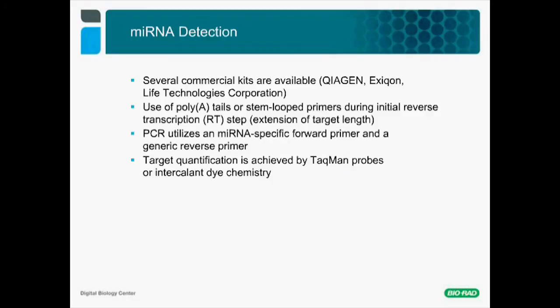Several commercial kits are currently available from companies such as Qiagen, Exiqon, or Life Technologies. They mainly use poly-A tails or stem-loop primers during an initial reverse transcription step to extend the length of the target. A PCR then utilizes an miRNA-specific forward primer and a generic reverse primer complementary to the tail or primer attached initially. Finally, target quantification is achieved by TaqMan probes or intercalant dye chemistry, such as EvaGreen or SYBR Green.